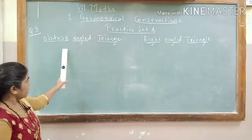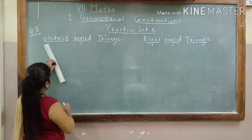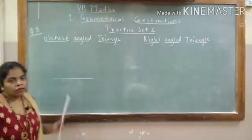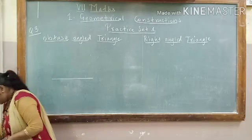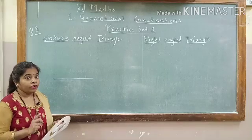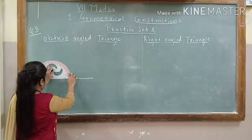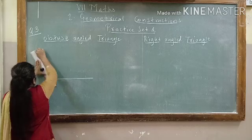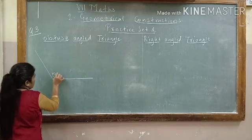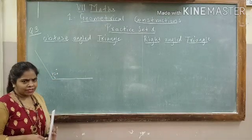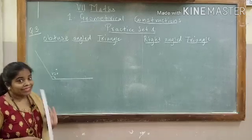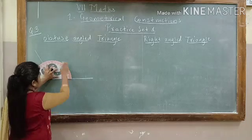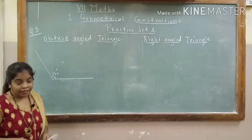We are going to draw one obtuse angled triangle and one right angled triangle. Let's start. First, we will draw the base. You can take any measure, and now we will make an obtuse angle of 120 degrees. I want to draw the angle bisector for this angle. Half of 120 will be 60. So I will just make a small marking of 60 degrees because I want to make my angle bisector. This is my marking of 60 degrees — it will help me later on.